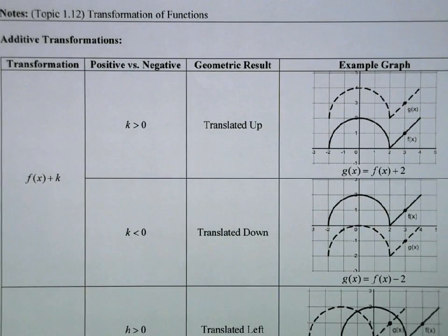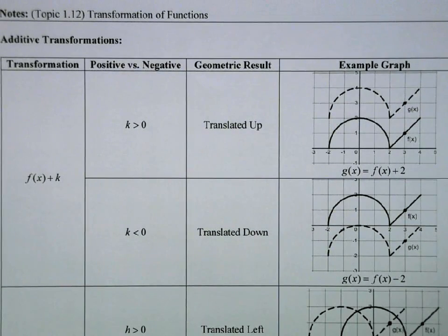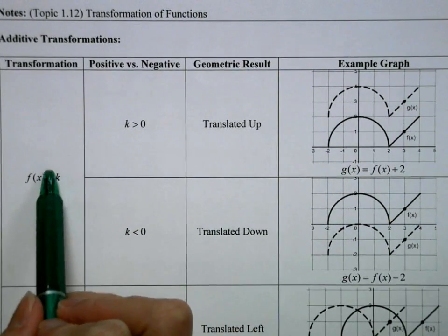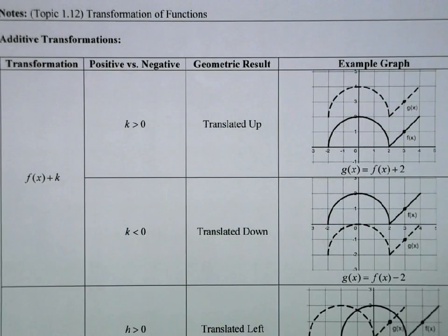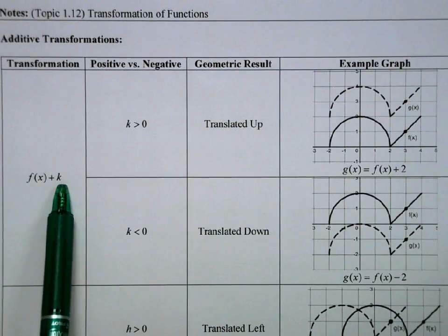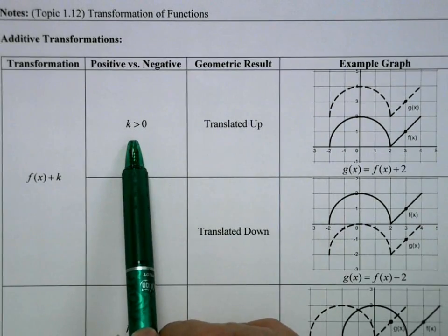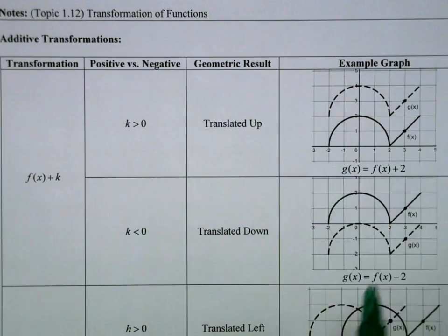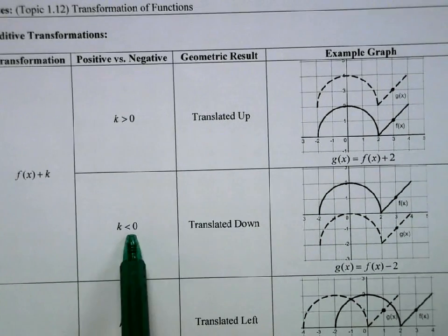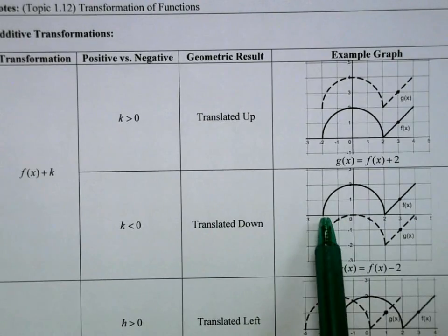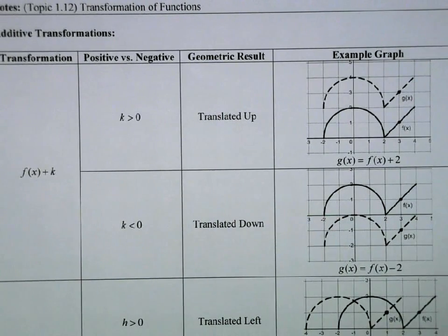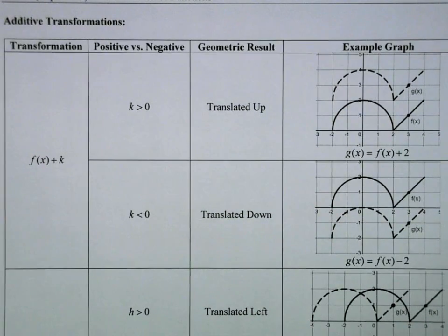In this video, I'm going to go over AP Pre-Calculus topic number 1.12 about transformations of functions. First we're going to talk about additive transformations — what happens if we add a value to a function, and what is the graphic result. If we add a positive value to the function overall, it's going to move the graph up, adding that value to every y value. If it's less than 0, it's going to move the graph down however many units.